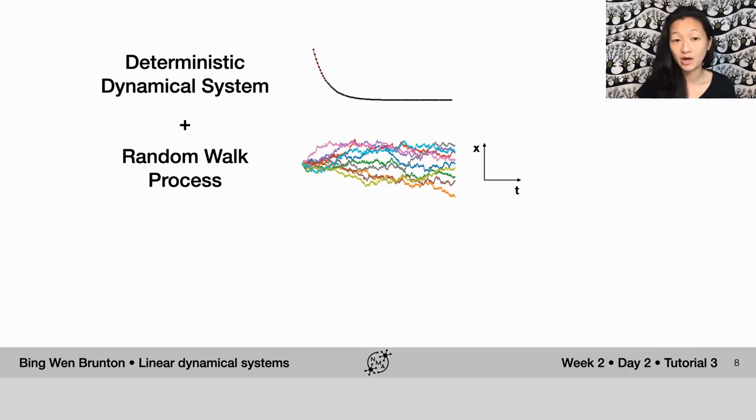If you glue together this random walk process with the deterministic dynamical system, exactly like the type that we did in Tutorial 1, what you end up with is an Ornstein-Uhlenbeck process that has aspects of this deterministic behavior with a little bit of randomness injected to it.